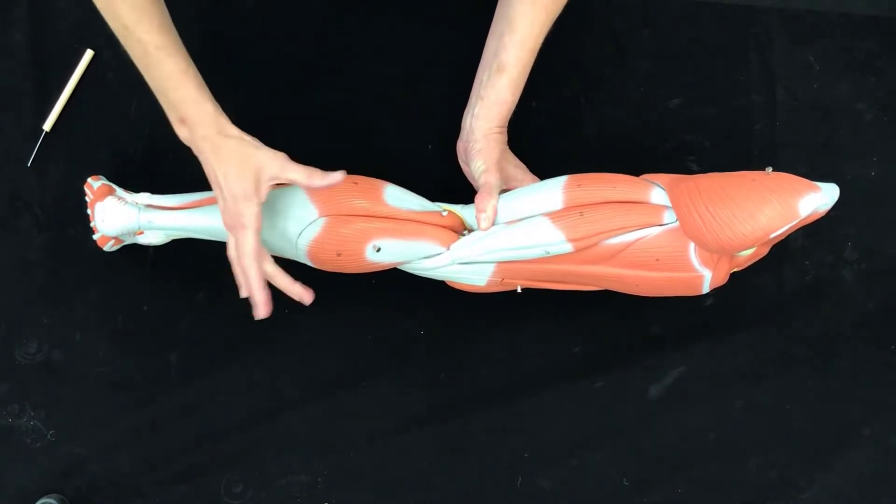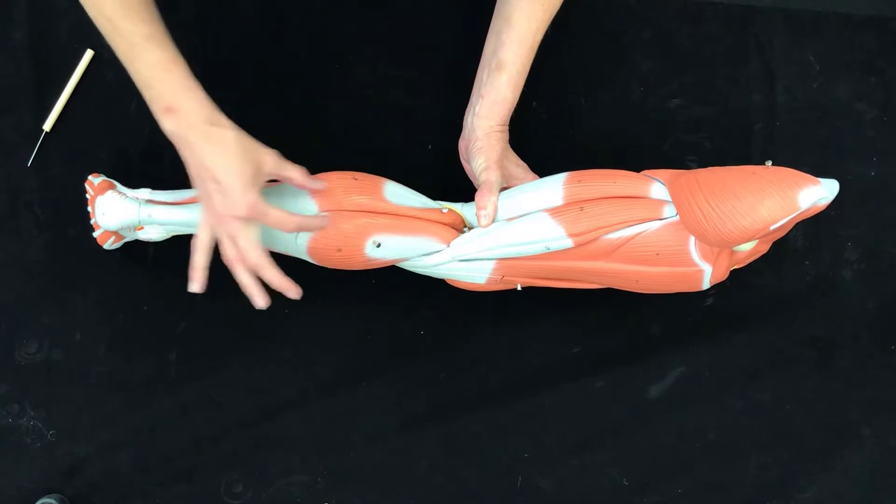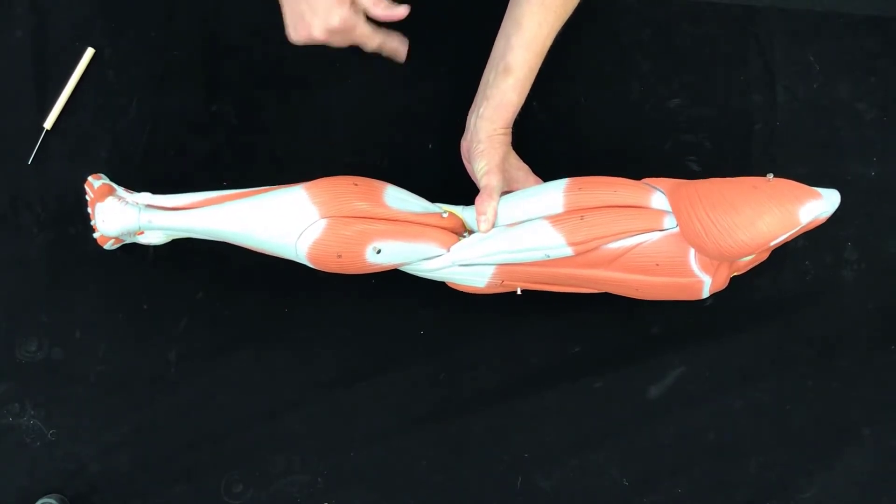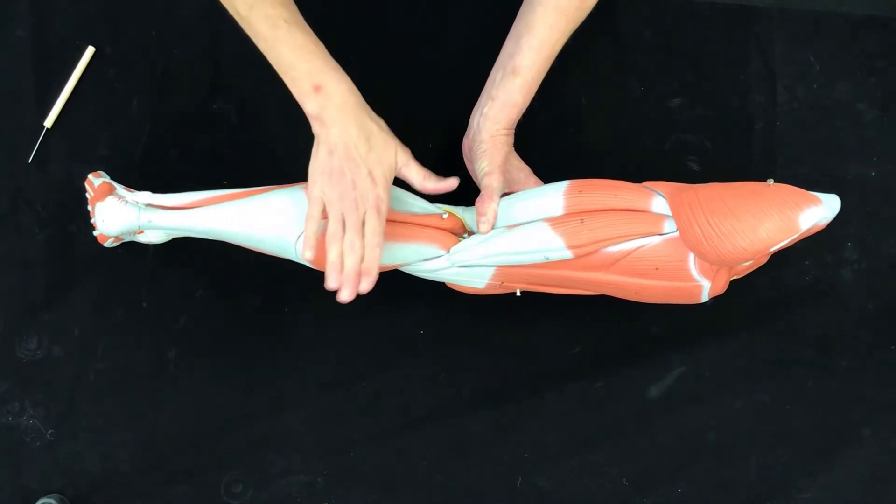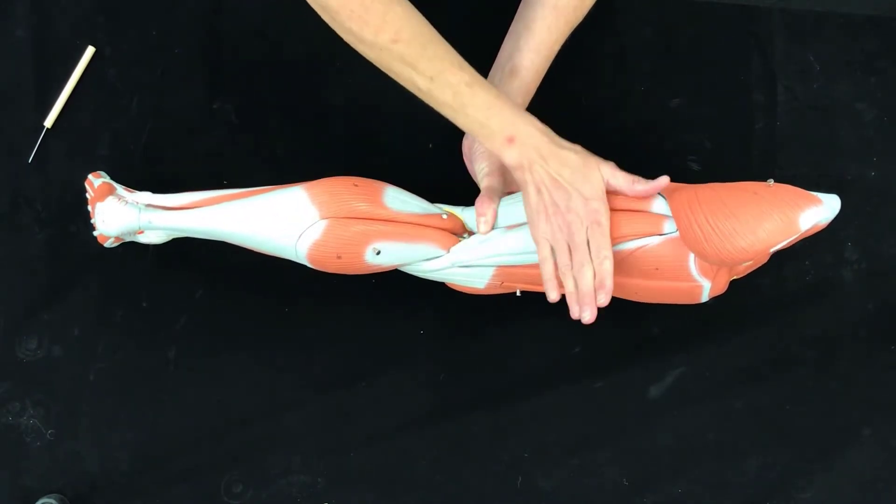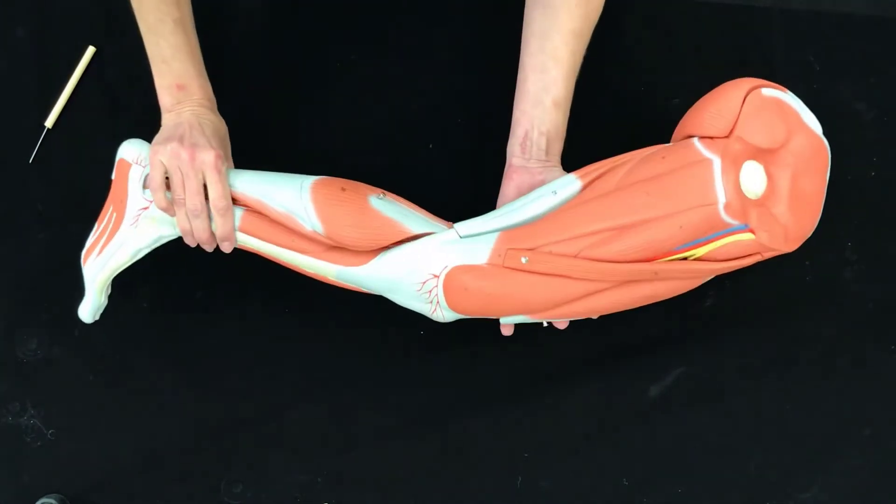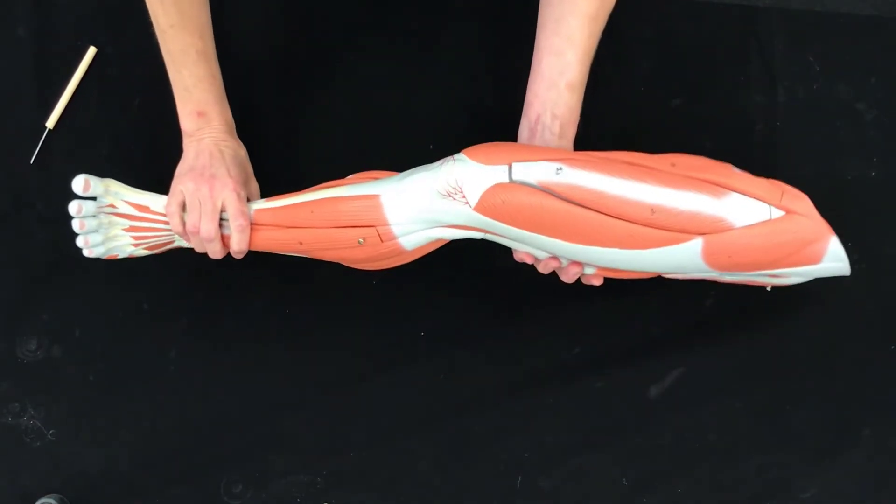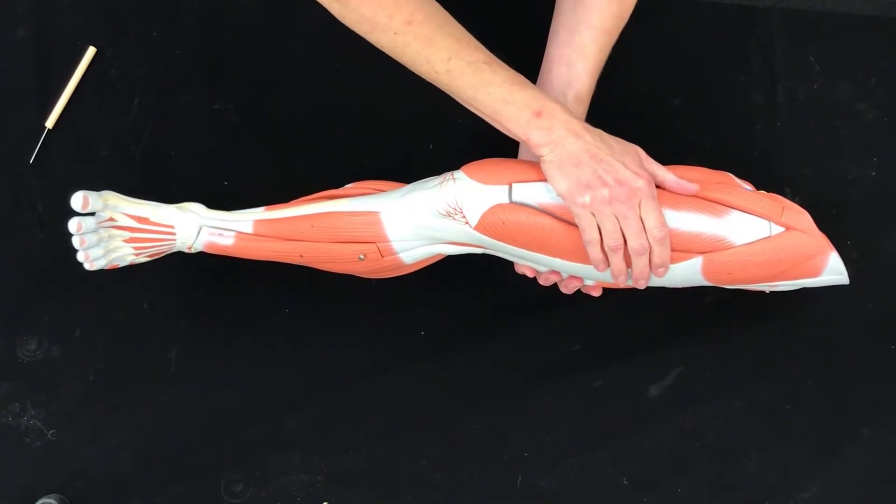This is your gastrocnemius and it's both of these muscles. It's a nice pretty calf muscle. Okay, so let's do those muscle groups one more time. We have gastrocnemius, hamstrings, adductor muscle group, quadricep muscle group.